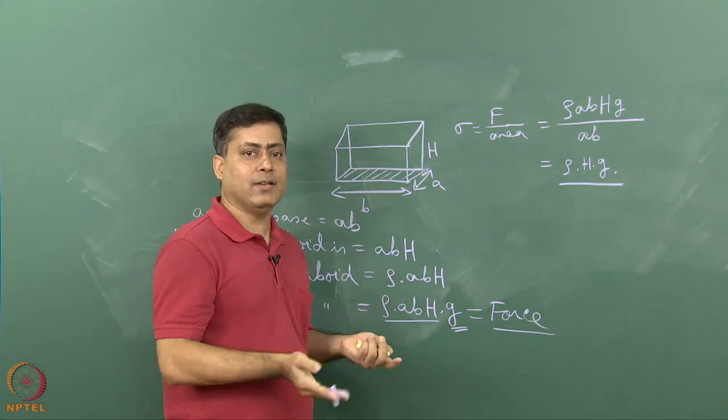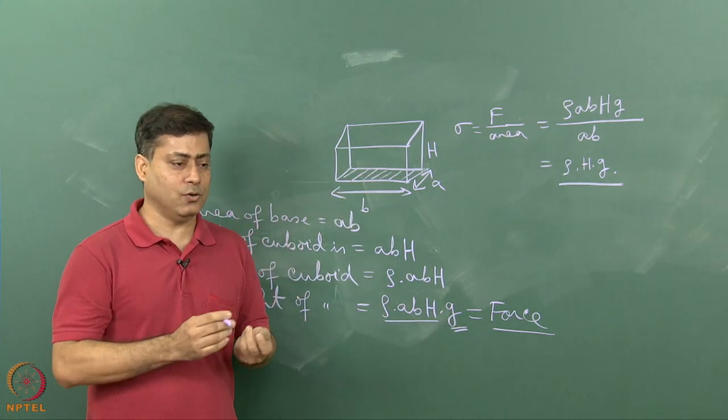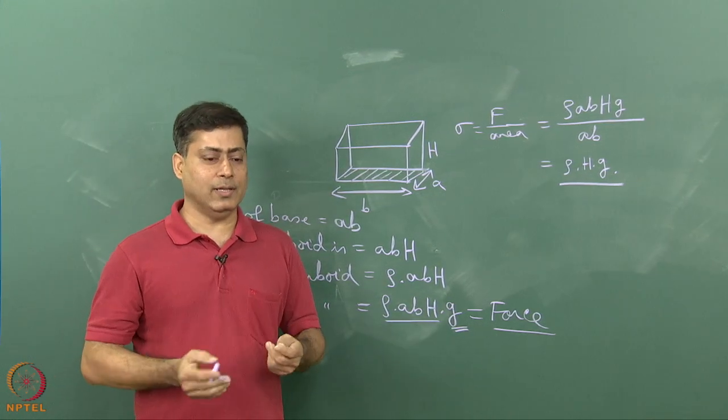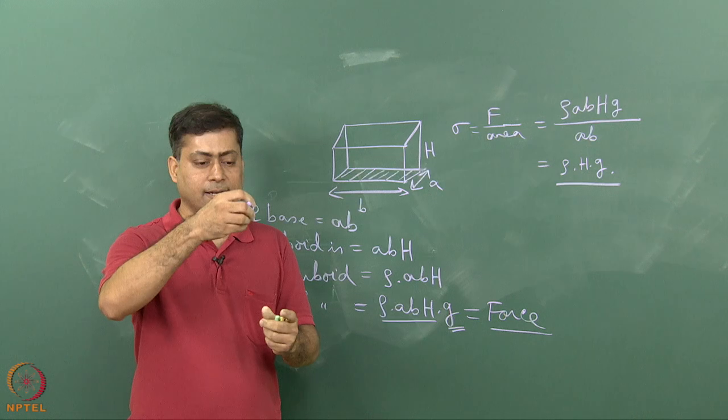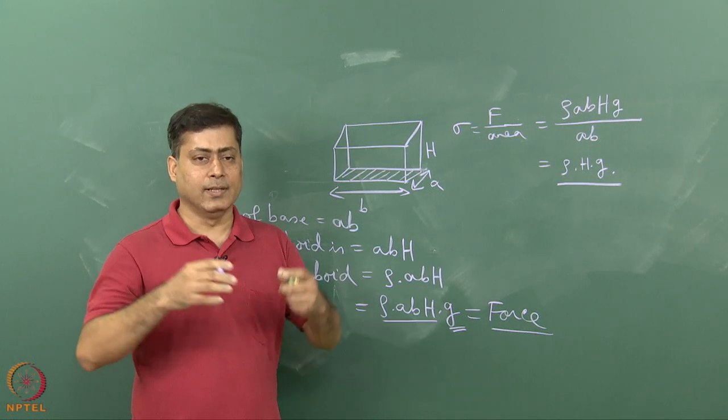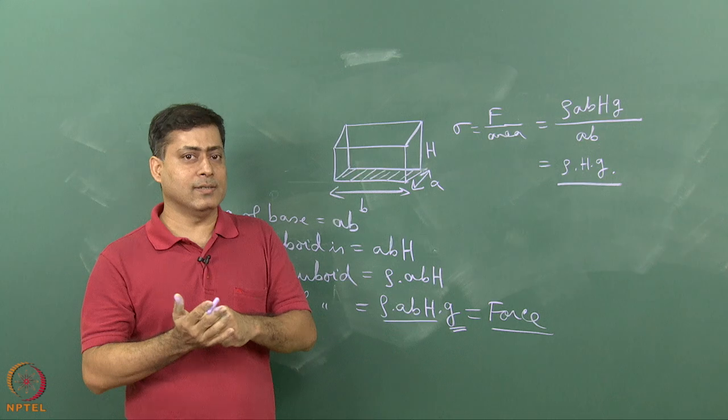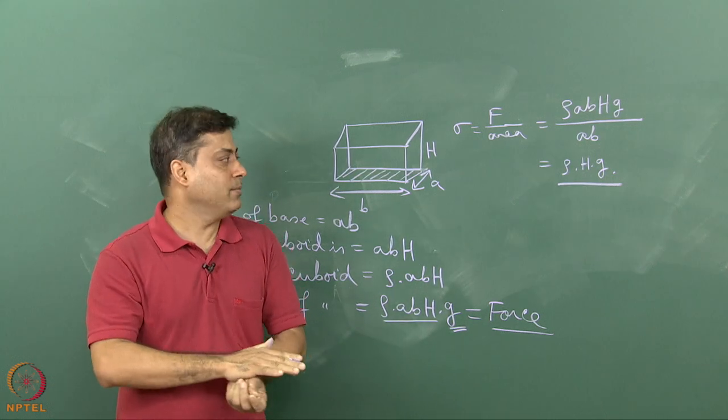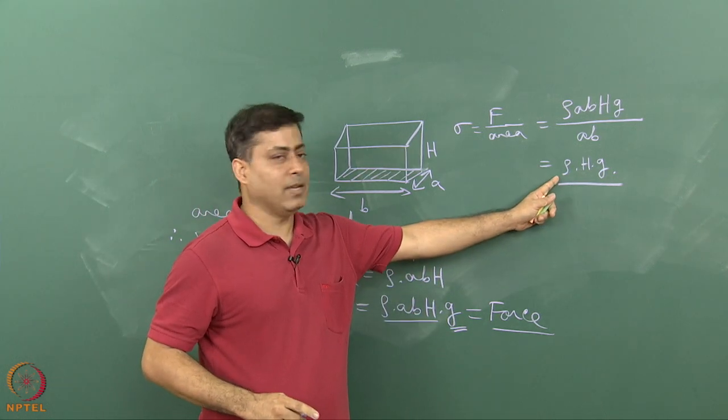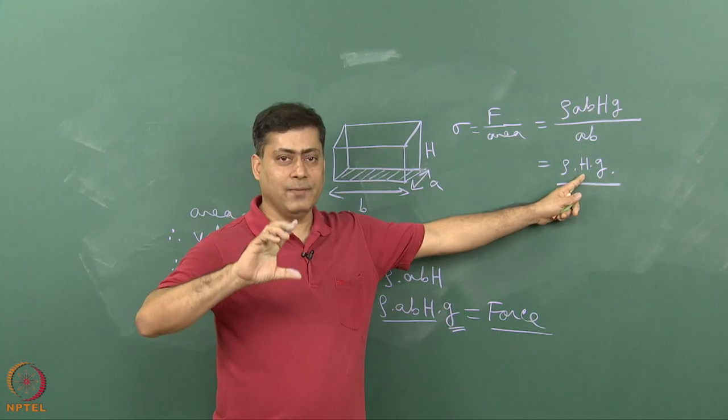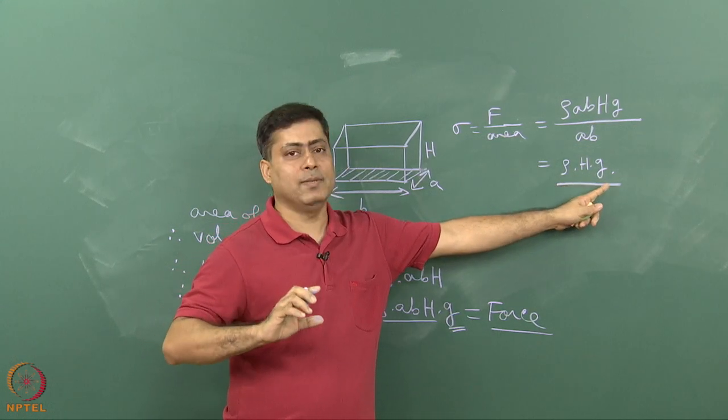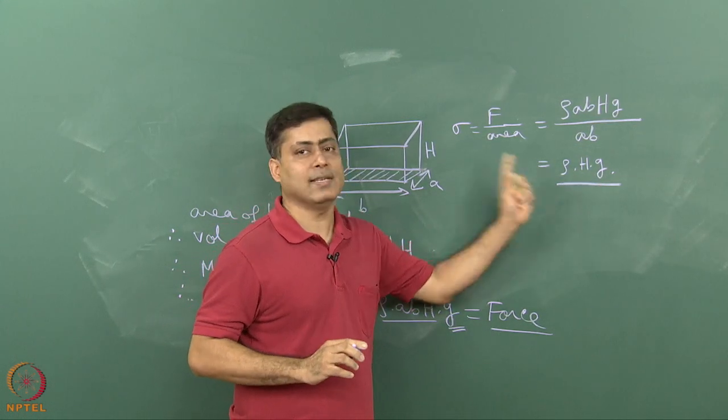Now keep this in mind and go back to the salt dome case. In the model there is a hollow cylinder and inside that another hollow cylinder, with fluids of different densities. How much will be the pressure exerted at the base? It will be rho multiplied by its density, multiplied by the height of the column, multiplied by acceleration due to gravity. So this is the explanation.